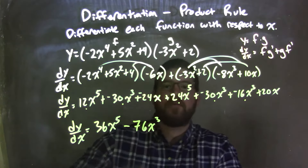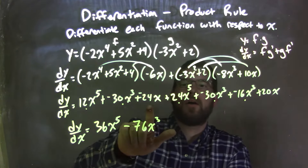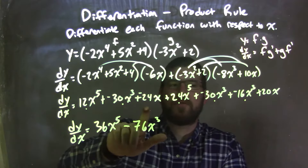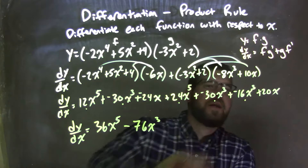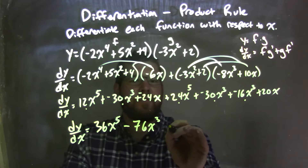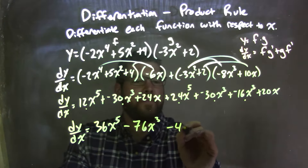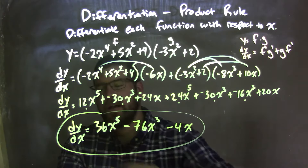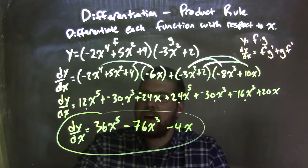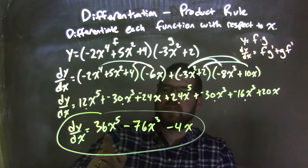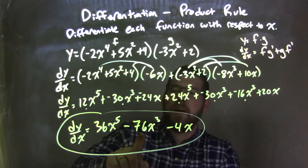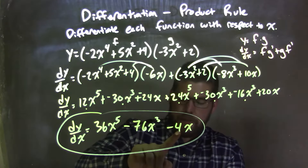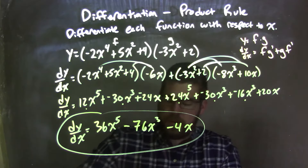And lastly, the remaining terms are just x's. Negative 24x plus 20x is negative 4x. And there we have our final answer: dy/dx is equal to 36x to the 5th minus 76x to the 3rd minus 4x.